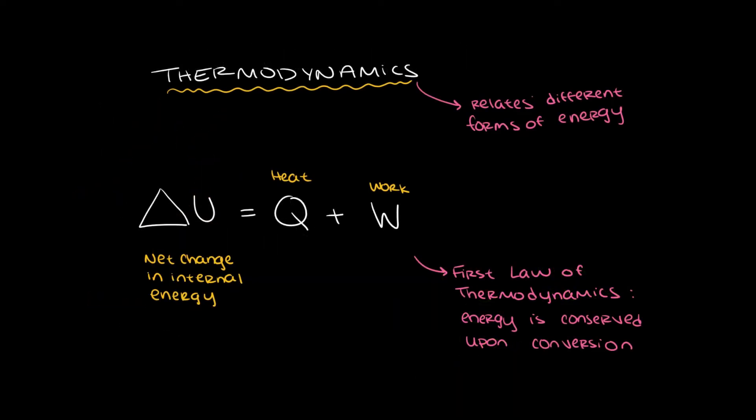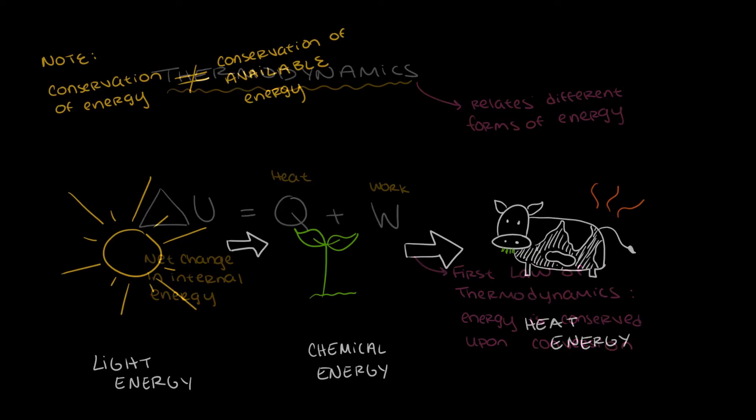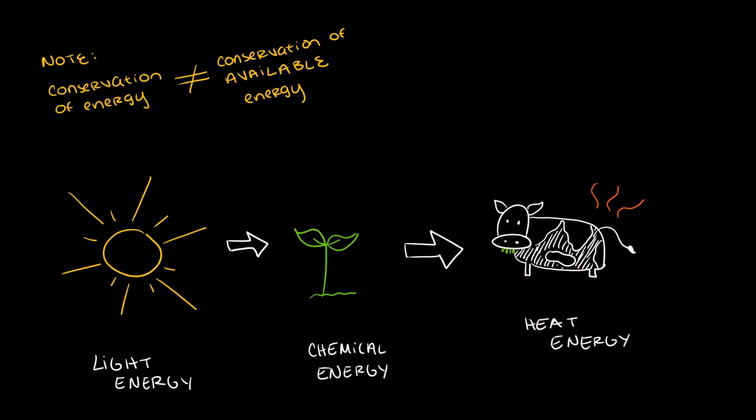Now, what is thermodynamics? Thermodynamics explains how different forms of energy are related to each other. The first law of thermodynamics states that energy cannot be created nor destroyed. However, one type of energy can be converted into another. Conservation of energy is different from the availability of energy.